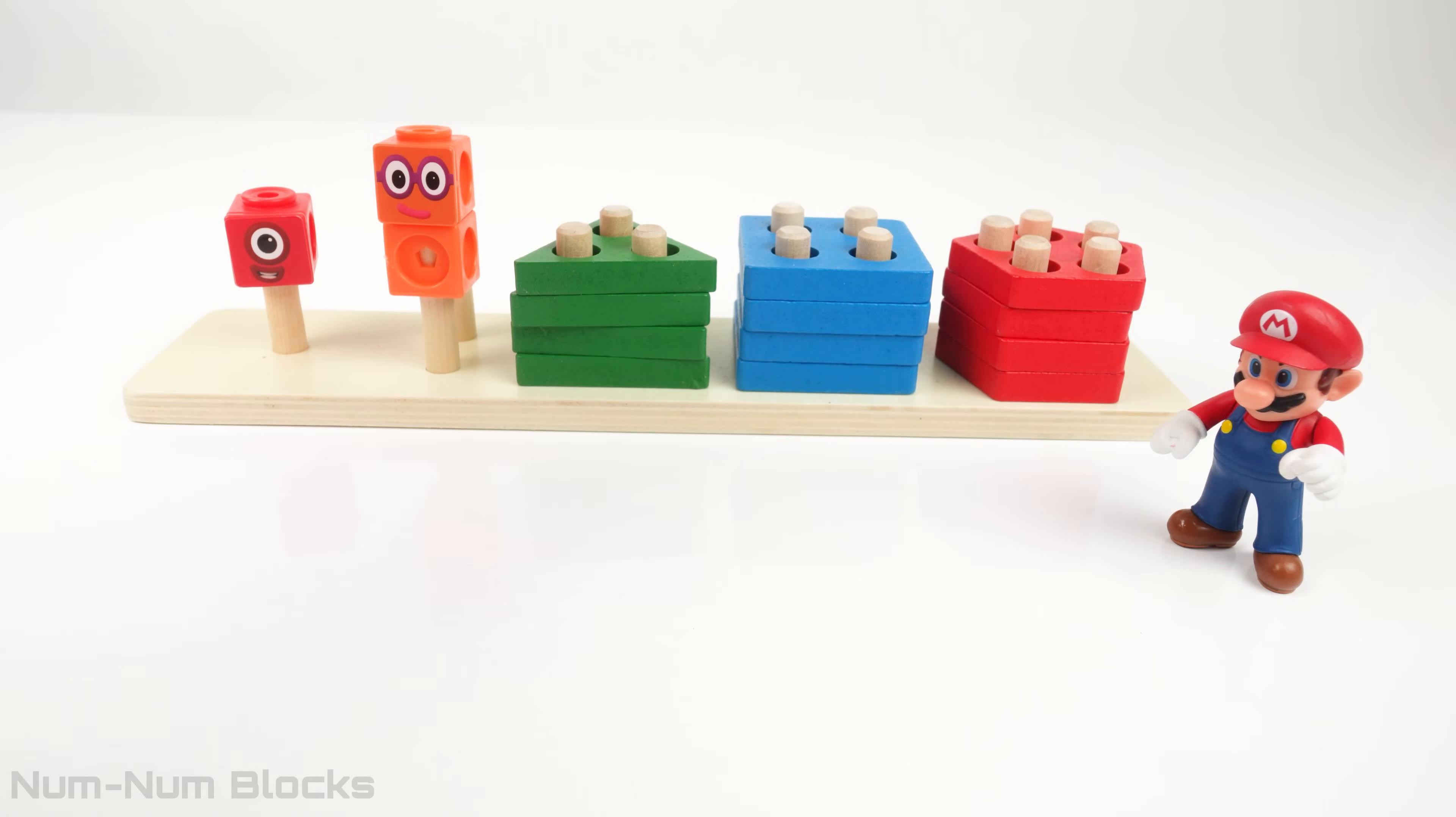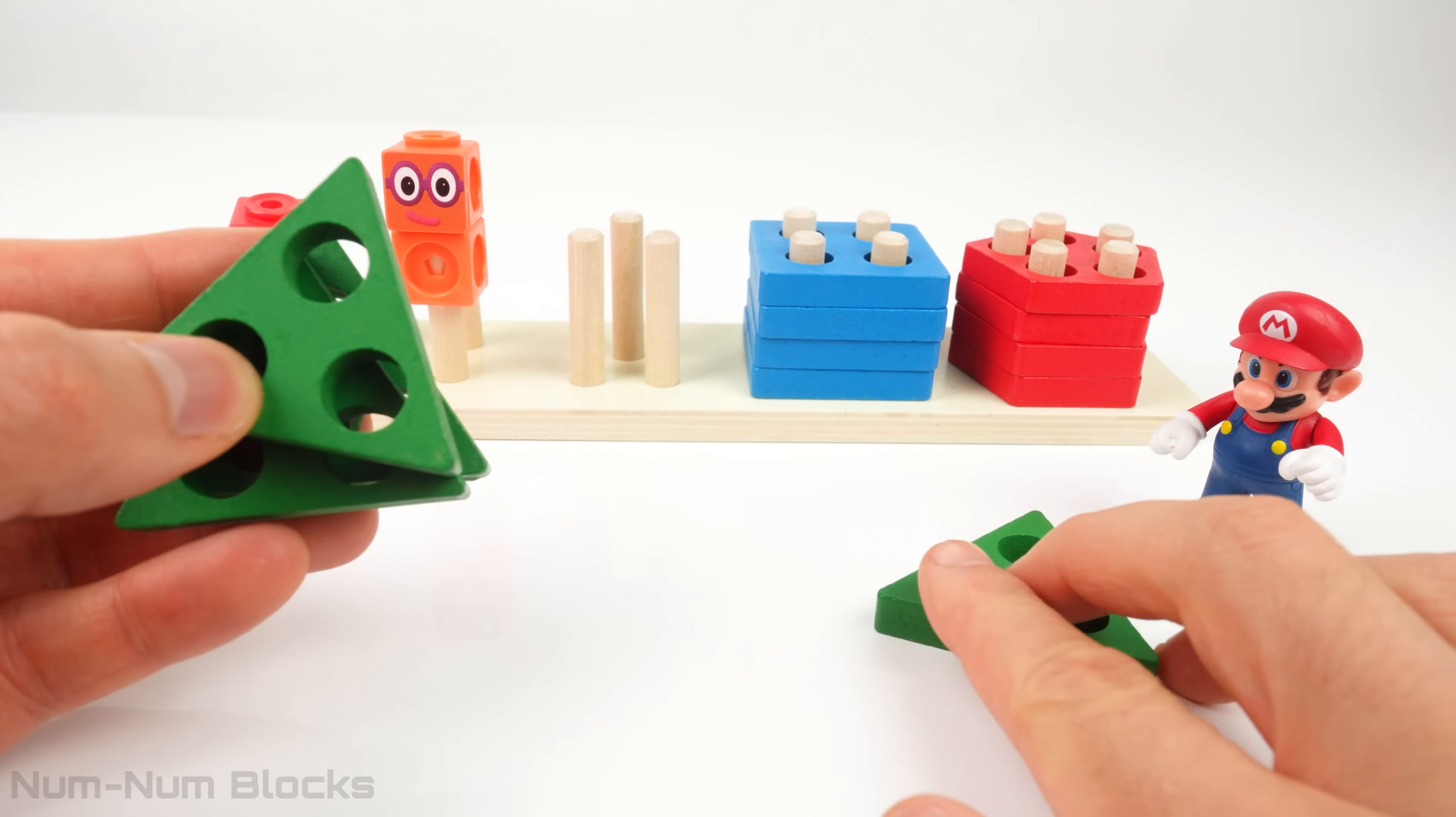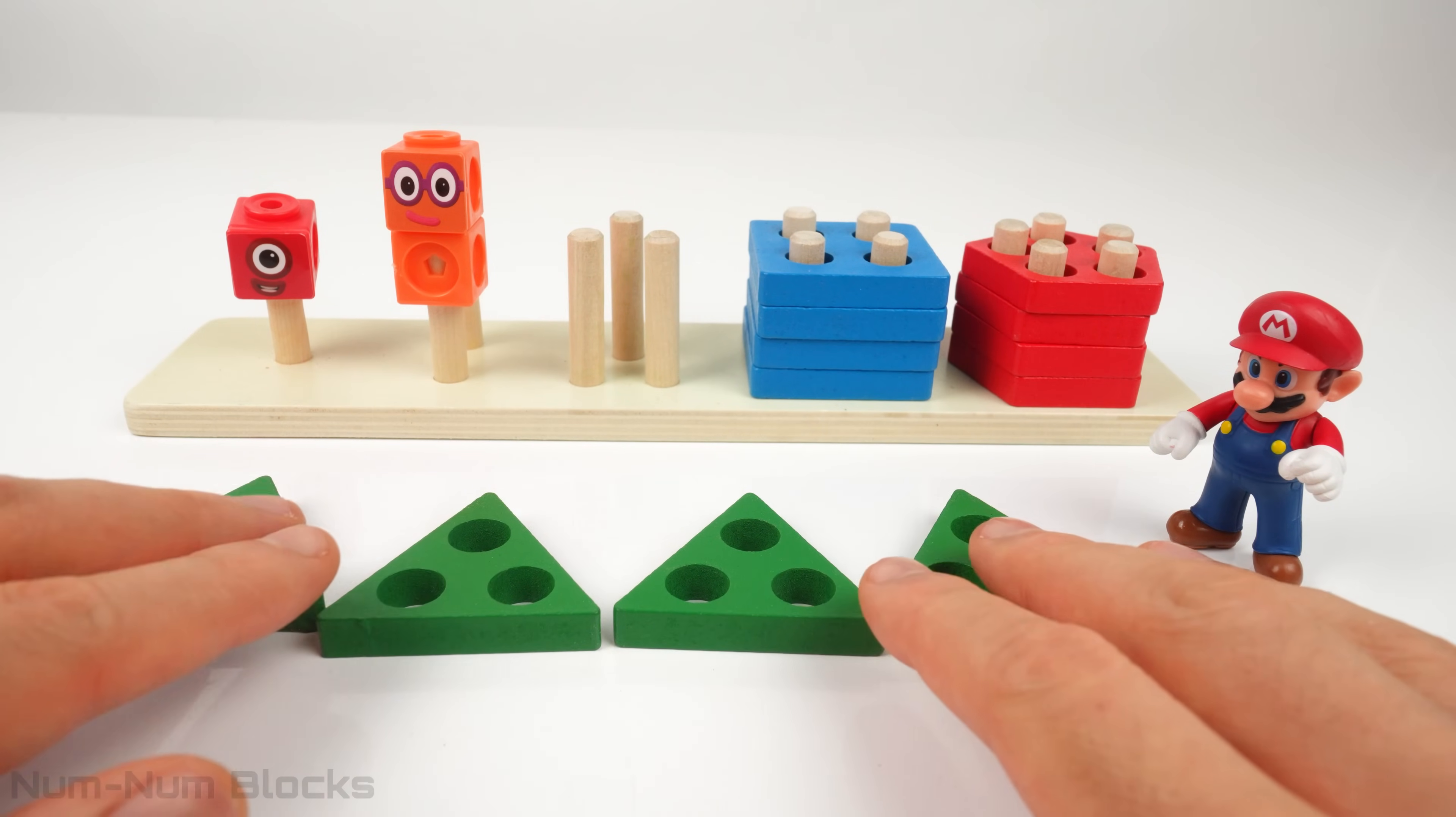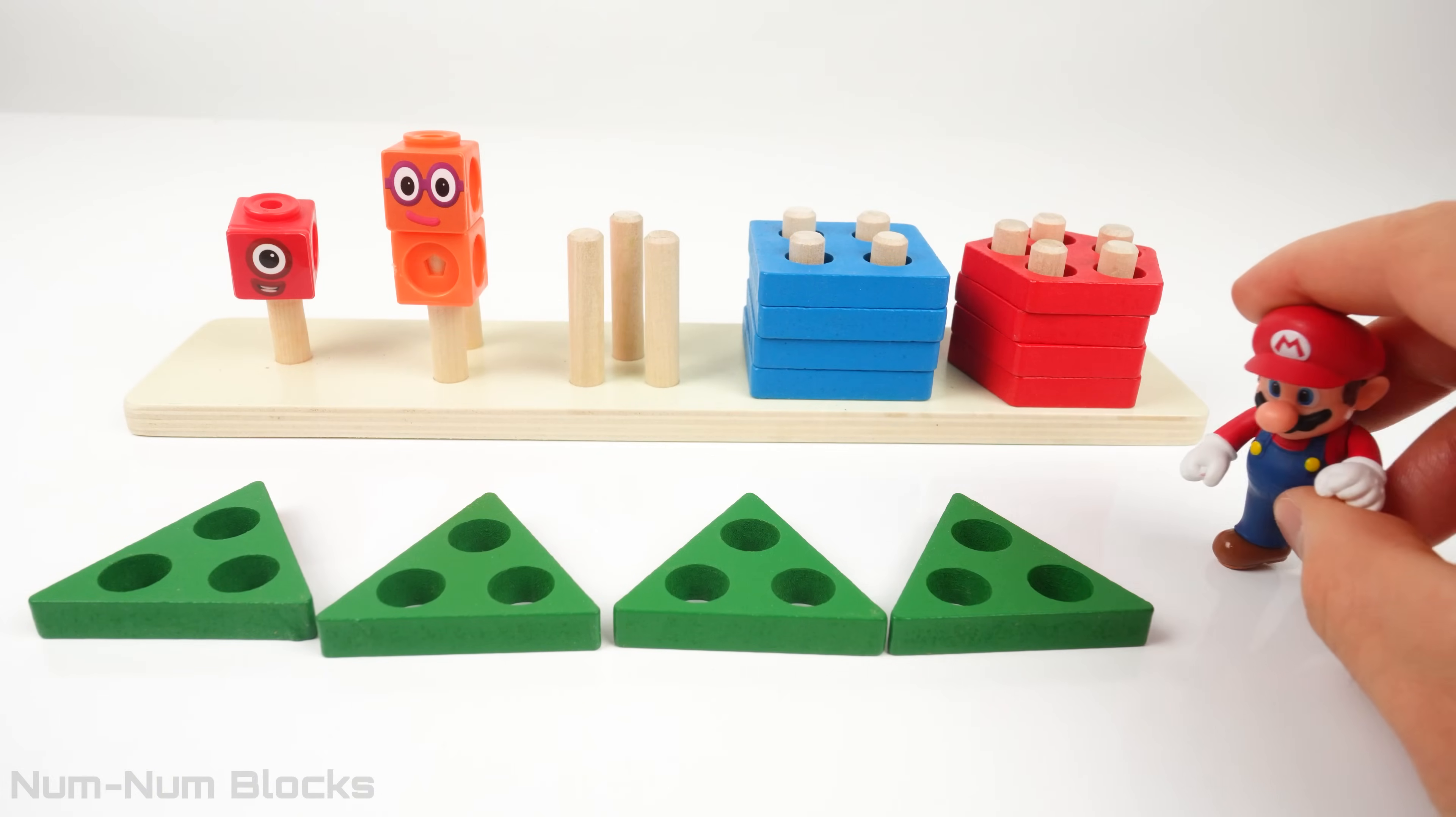Next we have the green triangles. We want three green triangles to bring back number block three. One. Two. Three. Four. There are also four shapes. So how many shapes do we need to remove to get to three? Whoa! Just one.